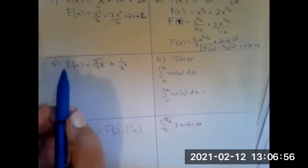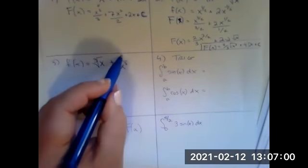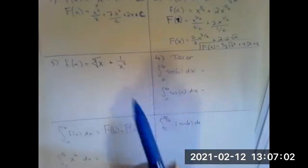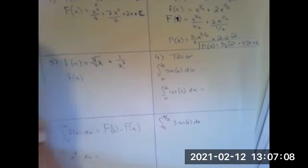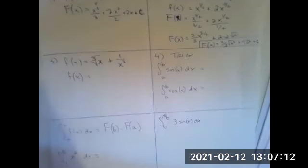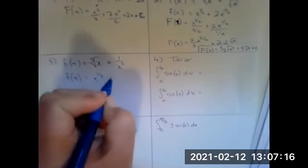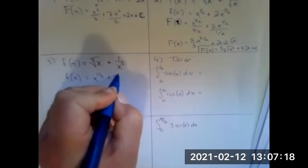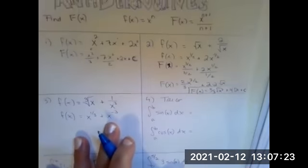We'll do another one. Here we've got number three: F of X equals cube root of X plus one over X to the third. Just like before, I want to rewrite this with exponents instead of radicals. I'm not taking the antiderivative yet — I'm just rewriting it as X to the one third plus X to the negative three. That makes it a little easier to use the power rule.